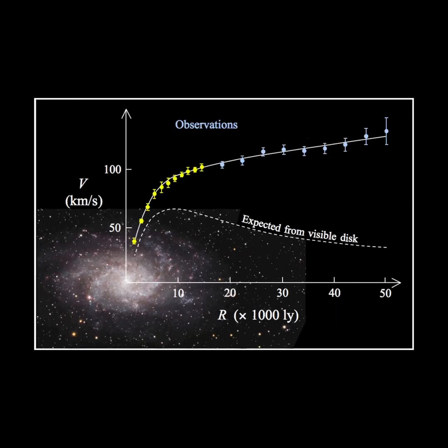We can observe the total visible amount of matter within galaxies to estimate its total mass. We can also observe the speed at which stars orbit around their galaxies. The mass estimates and the stellar orbital speeds tend to be in agreement around the galactic center, and even a bit further out. However, this is not the case in the outer regions of the galaxy.